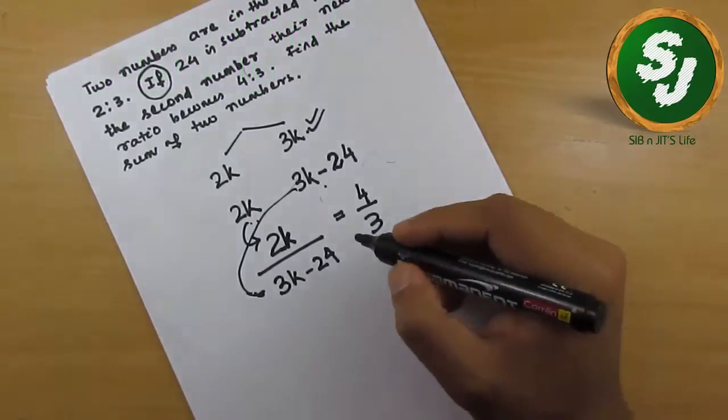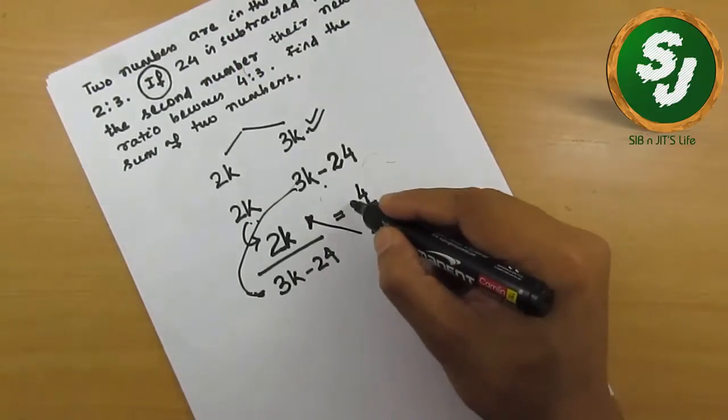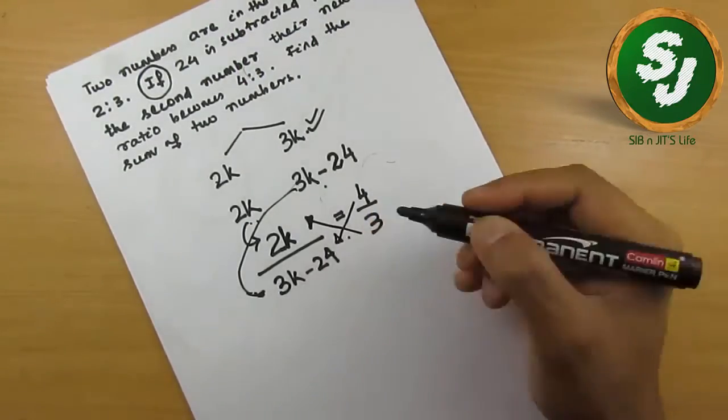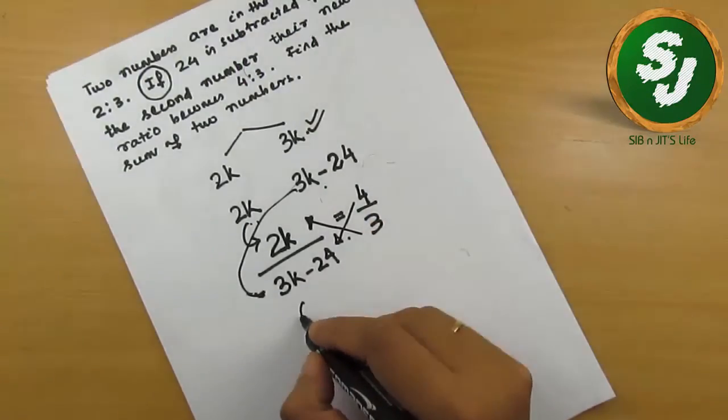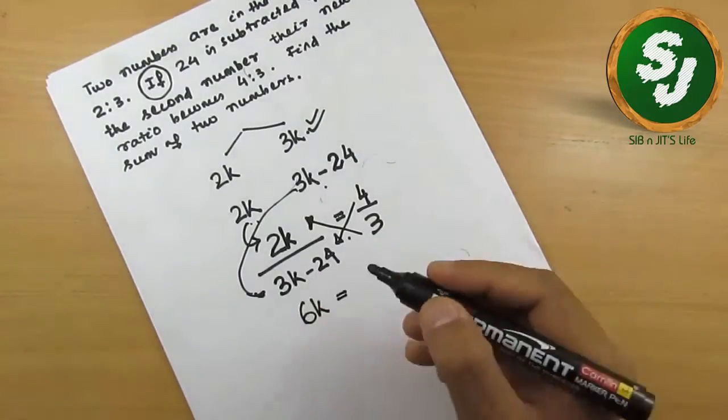question, this form of question, we will go for cross multiplication. 3 will be multiplied here, 4 will be multiplied here. So let's solve this. 3 into 2k, that is 6k. 4 will be multiplied with 3k minus 24, so